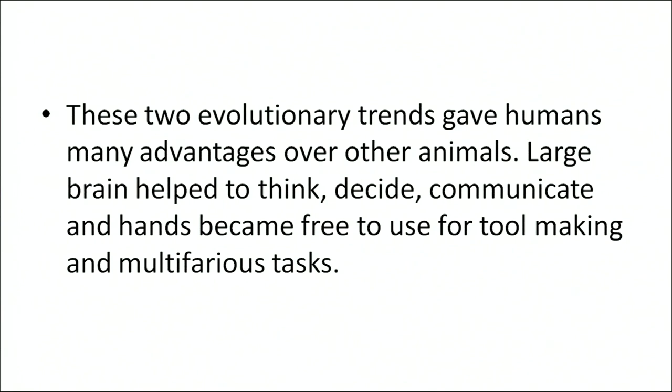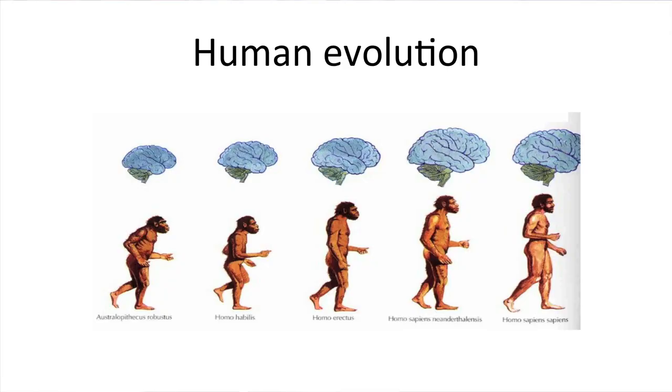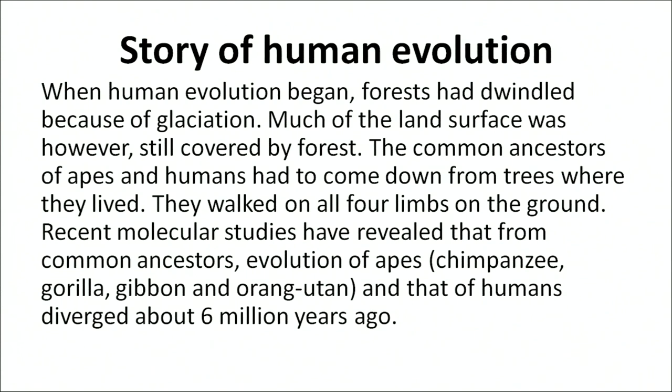A large brain helped humans to think, decide, communicate, and make tools for multifarious tasks. When human evolution began, forests had dwindled because of glaciation, though much of the land surface was still covered by forest. The common ancestors of apes and humans had to come down from the trees where they lived and walked on all four limbs on the ground. Recent molecular studies have revealed that from common ancestors, the evolution of apes and humans diverged about 6 million years ago.